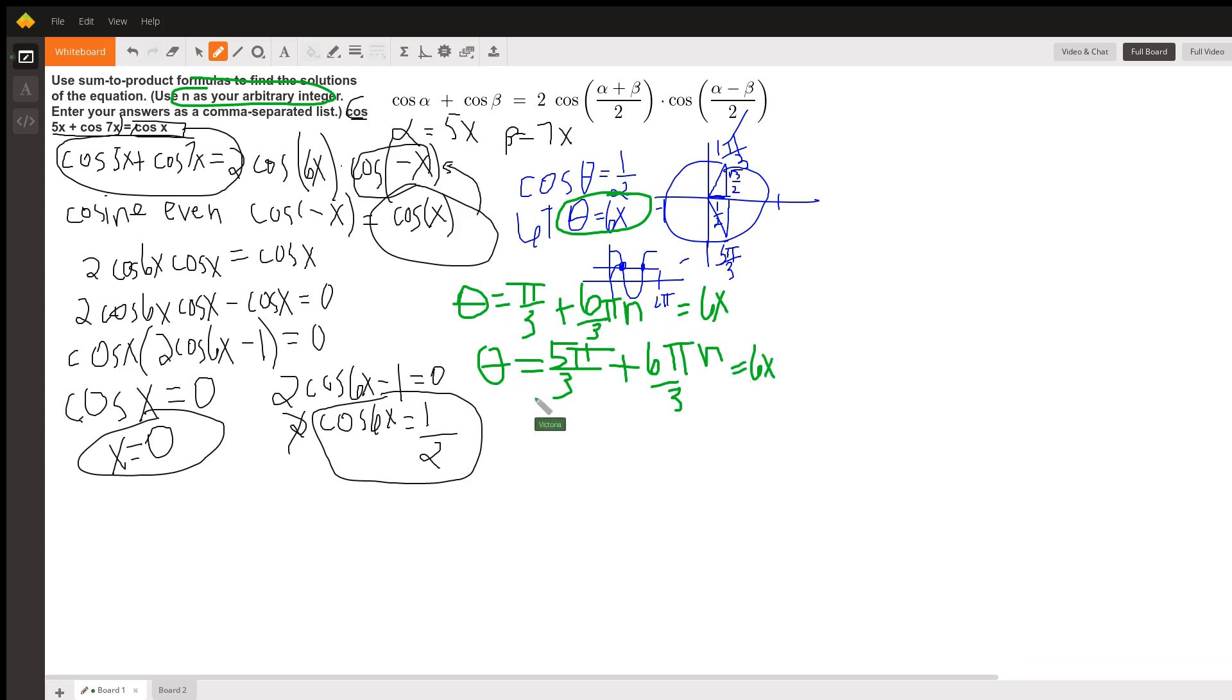Which means if you divide both sides by 6, you will get that x equals pi over 18 plus 6 pi over 18 n. And then from the 5 pi over 3, we get that x equals 5 pi over 3. And when we divide both sides by 6, only I'm not simplifying the fraction because it's easier to add fractions with like denominators. So this is gonna be 5 pi over 18 plus 6 pi over 18 n. So there's your answers.